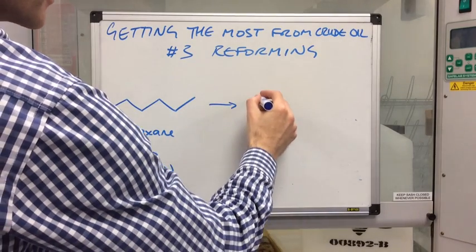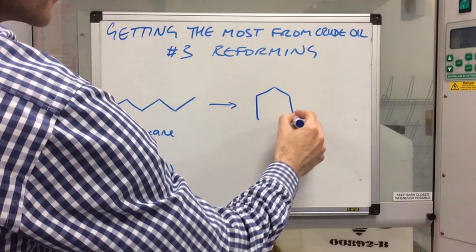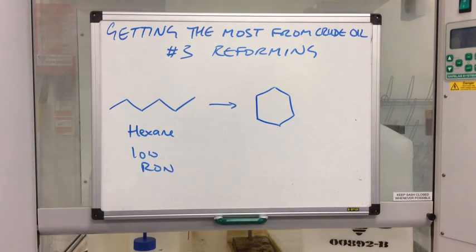So there's an example of what we can do with that. So instead of having straight chain hexane, we turn it into cyclohexane.